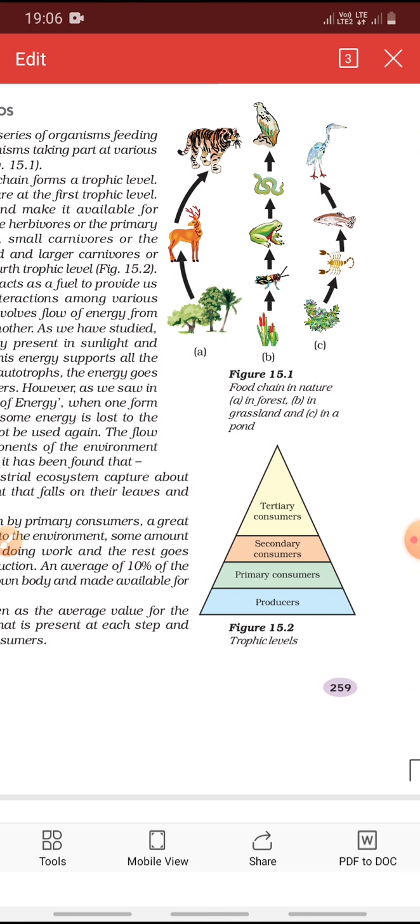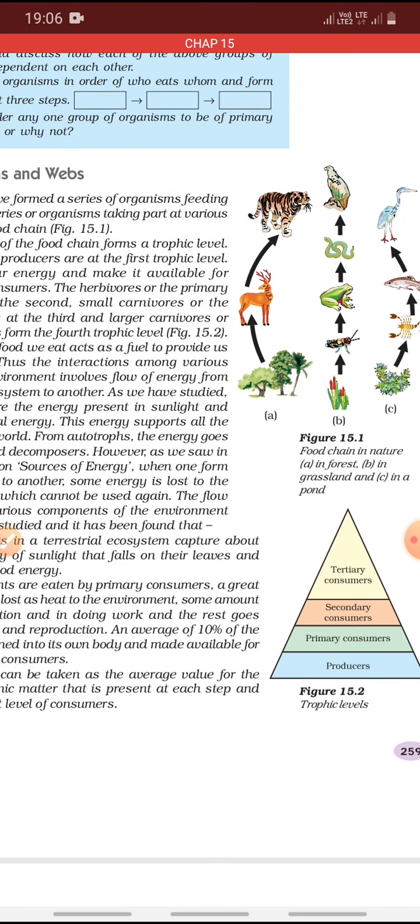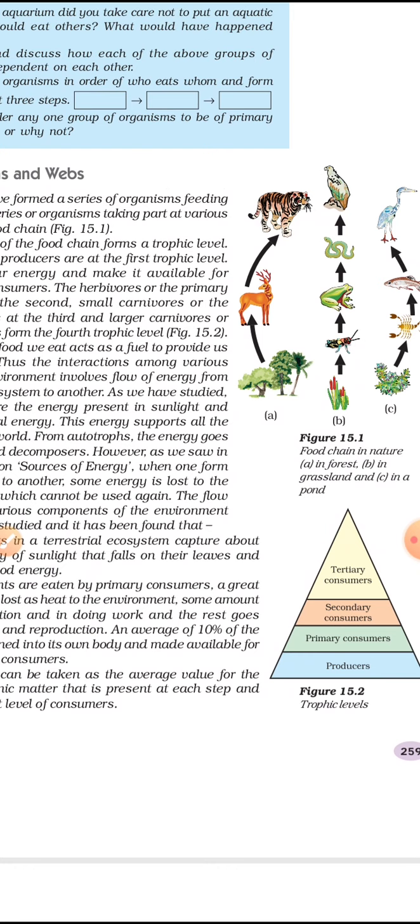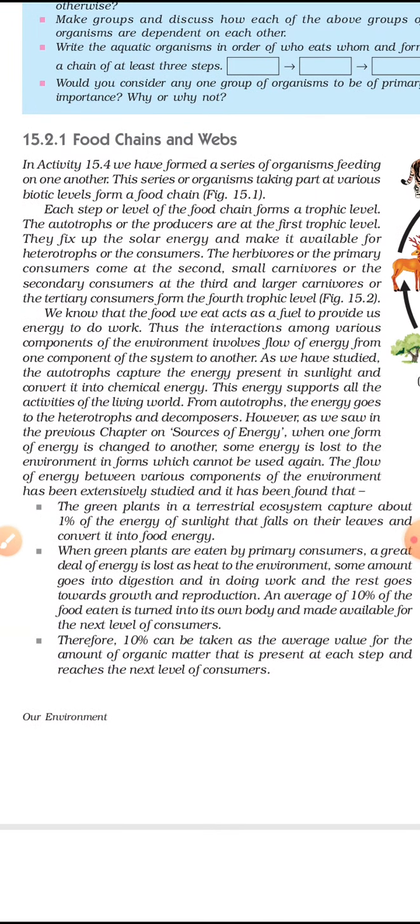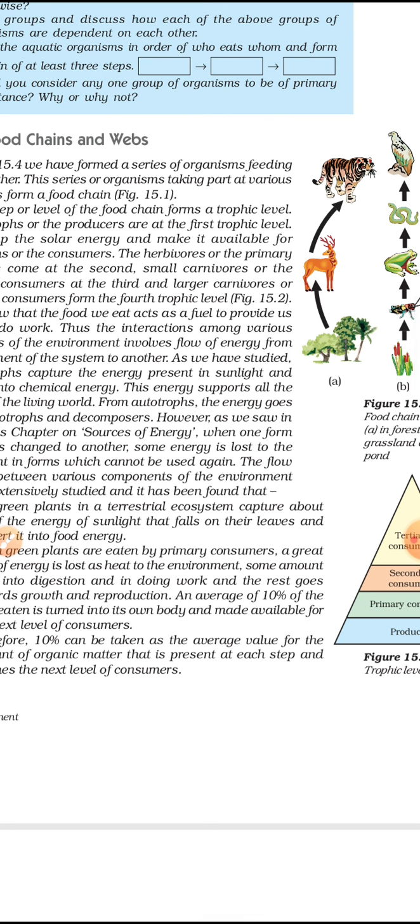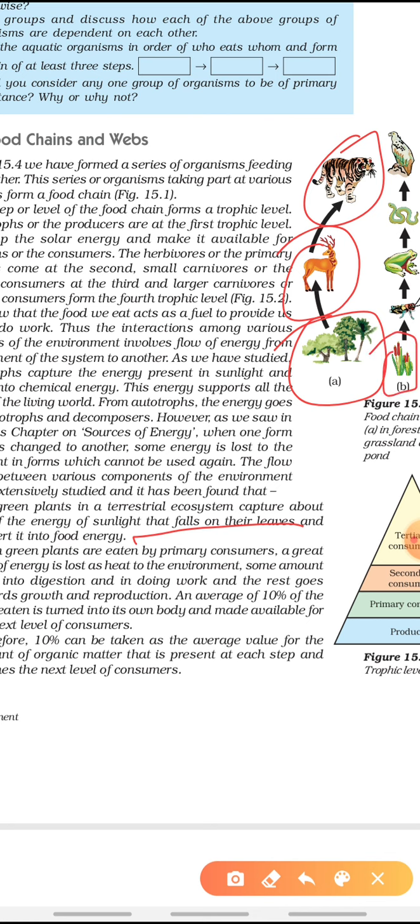Various organisms have a series of feeding on one another. The series of organisms taking part at different biotic levels forms a food chain. For example, plants are eaten by deer, and deer is eaten by tiger. There's a unidirectional flow of energy. Each step in a food chain represents a trophic level. Here plants are the first trophic level, deer is the second, tiger is the third.